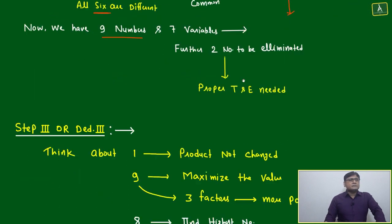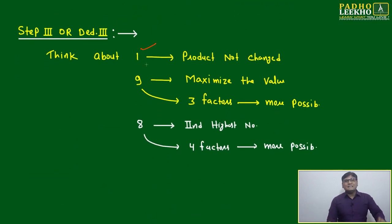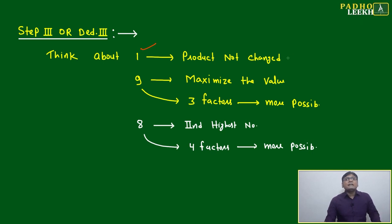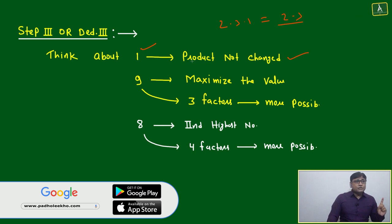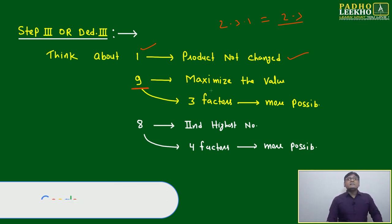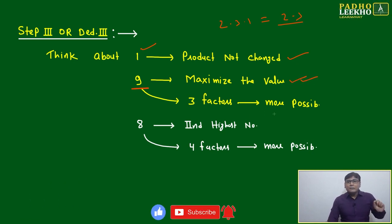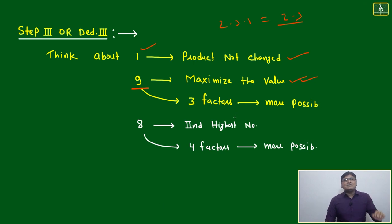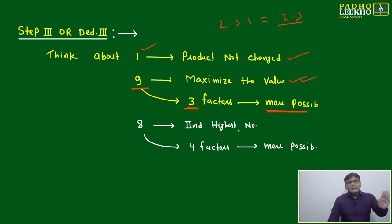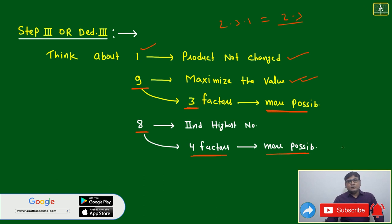Consider number 1: it is the smallest, and multiplying any number by 1 does not change the product, so 1 is flexible to place anywhere. Next, 9 maximizes the product value and has three factors. Then 8 has four factors — the highest factor count among single-digit numbers. So 1, 9, and 8 give the most flexibility.